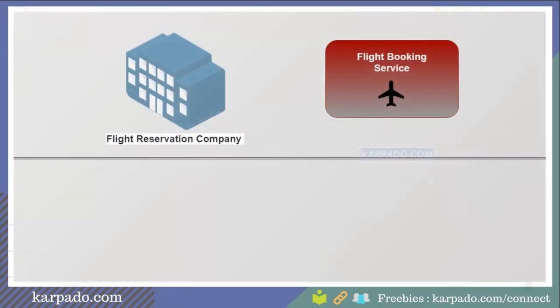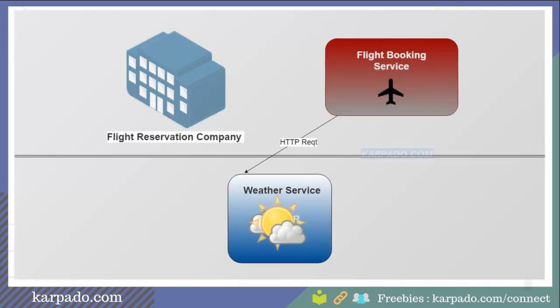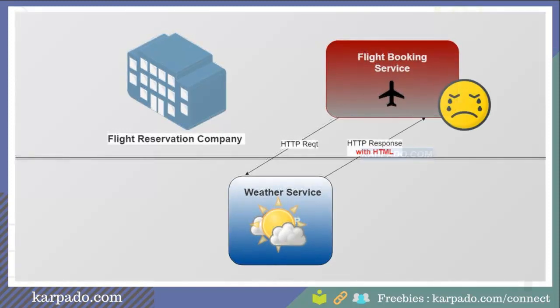Imagine there is another company providing flight booking services, so their customers can book flights. What they found out is that they also needed some weather information, depending on which they would schedule flights. At the same time, they don't want to spend a lot of money hiring people to develop that service for them. Instead, what they want to do is use our service by paying a certain amount. So they approach us, we agree on a contract, and from that point on they will send HTTP requests from their application to our service to extract the weather information.